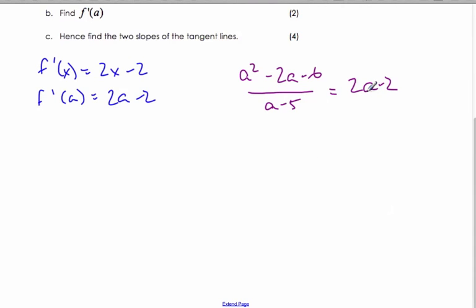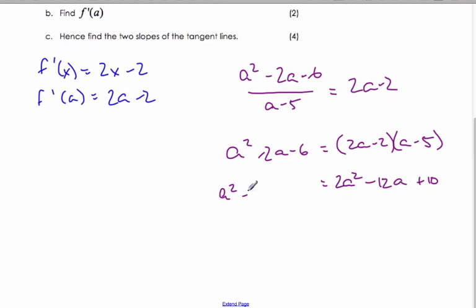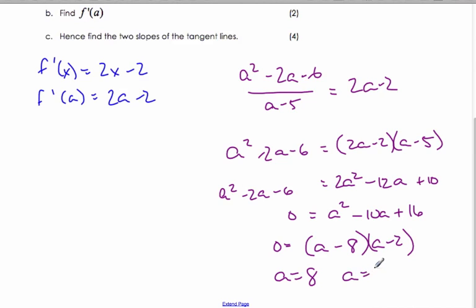Solving for a, I'm going to cross multiply. I get a² - 2a - 6 is equal to (2a - 2)(a - 5). That's 2a² - 10a - 2a + 10. So a² - 2a - 6 equals 2a² - 12a + 10. Moving everything over: a² - 10a + 16 equals 0. So I can say that (a - 8)(a - 2). So a equals 8 and a equals 2.